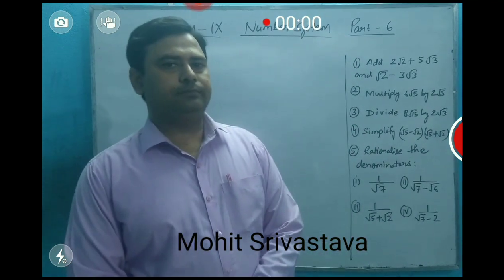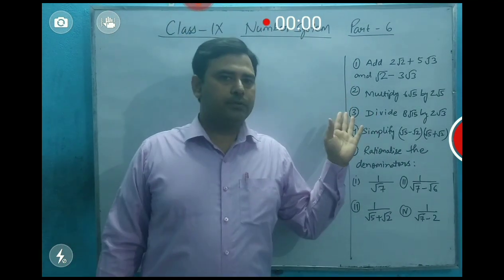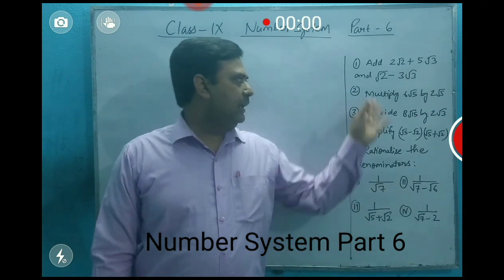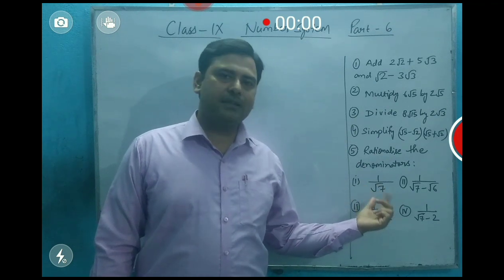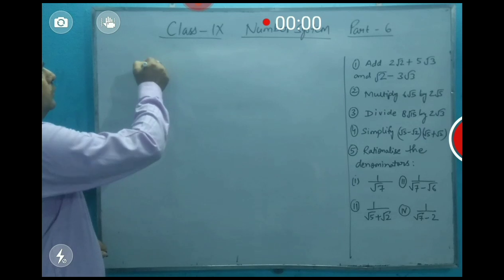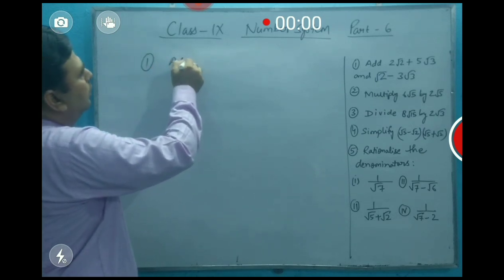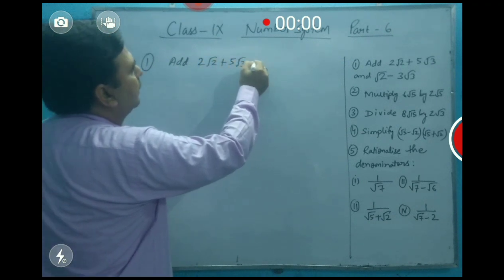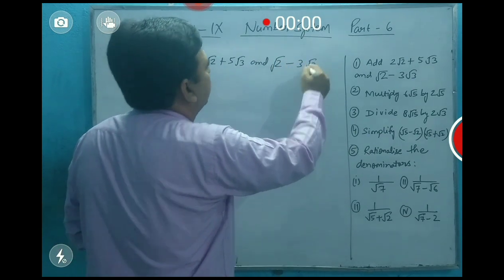In this lecture, we are going to solve some questions based on operations on real numbers, and one very important type of question to rationalize the denominator. In the first question, it is given for addition: add 2√2 + 5√3 and √2 - 3√3.